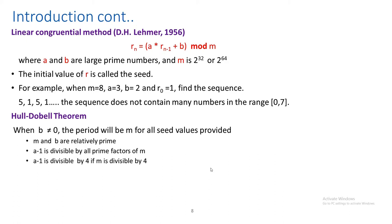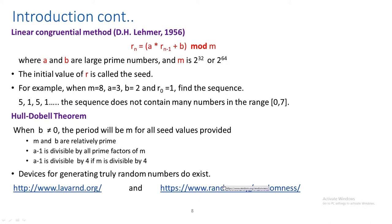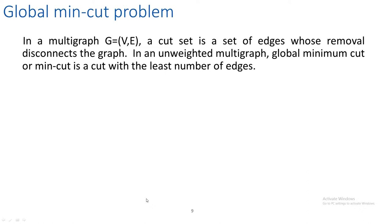There is a lot of research on using physical devices to generate truly random numbers, such as lava lamps. Now, moving to the global MinCut problem: in a multigraph, a cut set is a set of edges whose removal disconnects the graph. We focus on unweighted multigraphs. The global minimum cut is a cut with the least number of edges — a partition of the vertex set into two sets S and T where the number of edges between the two blocks is minimum.